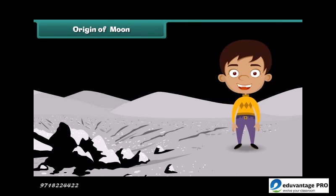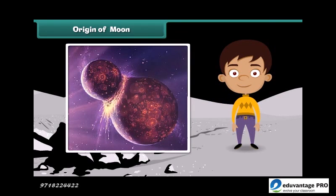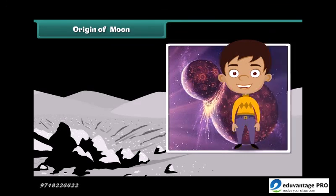Some suggest that an object of similar mass to that of Mars might have smashed into the Earth, creating a cloud of molten rock that eventually condensed into the moon.